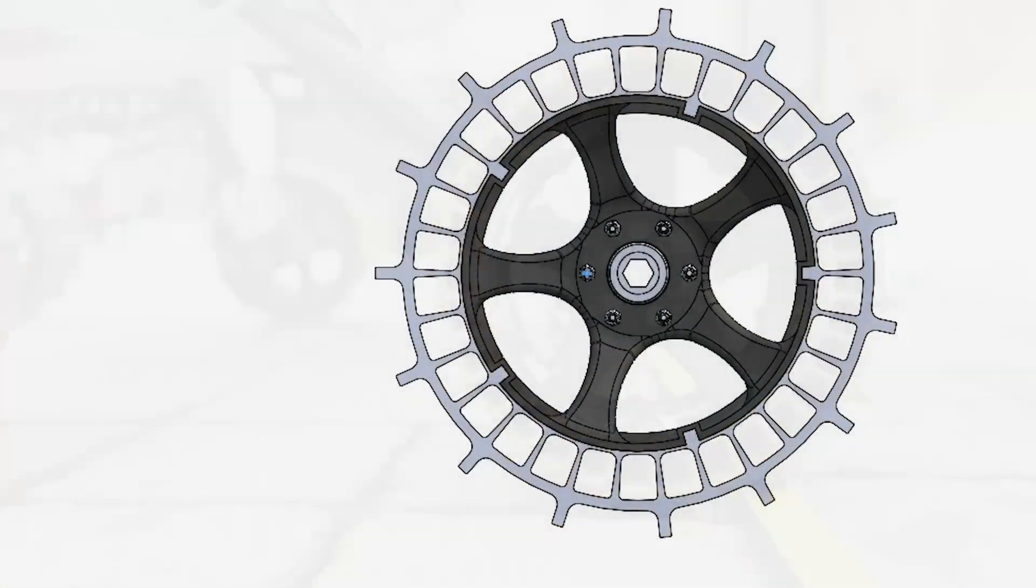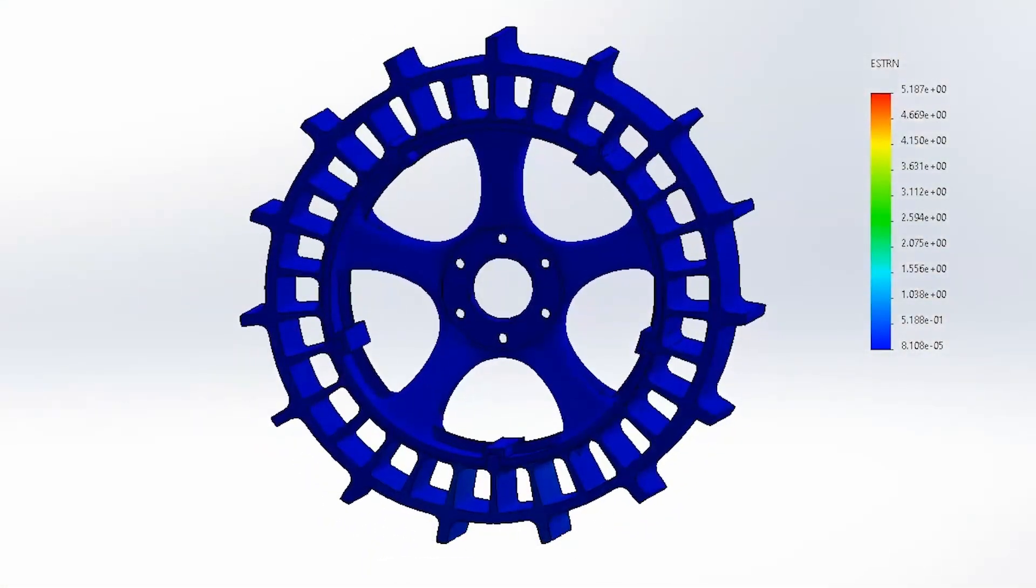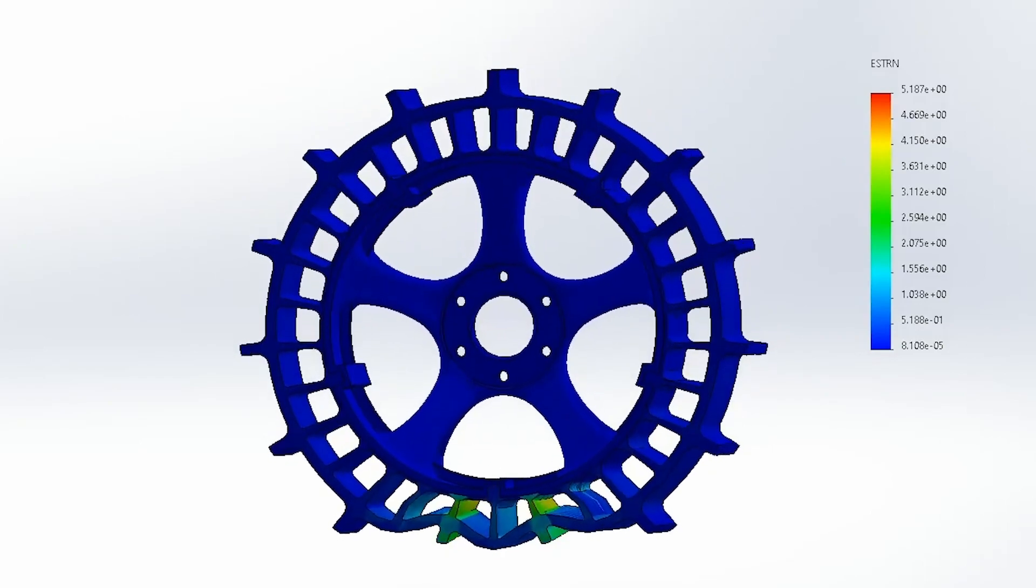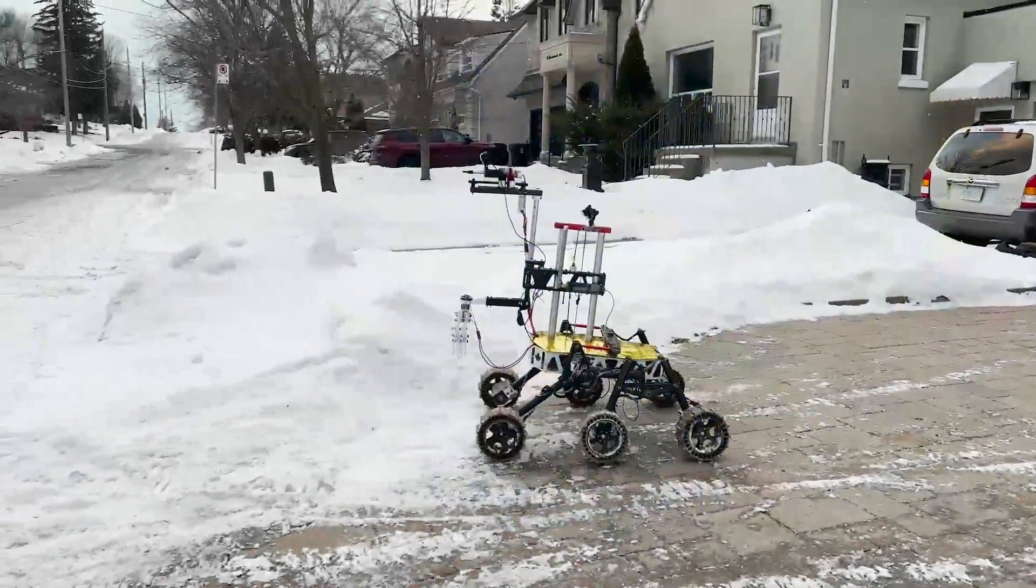Our wheel design is optimized for shock absorption and stability. The PETG hub has a slight flex and the polyurethane treads are able to conform to the terrain for a smoother ride.